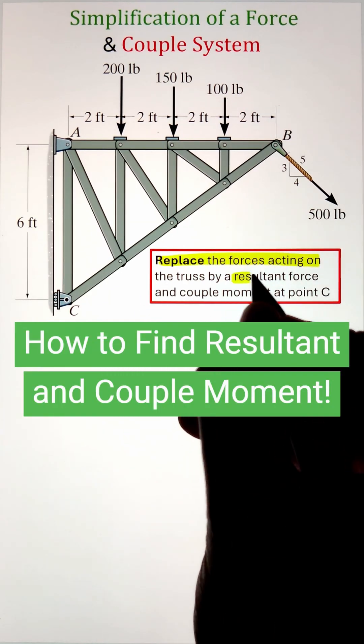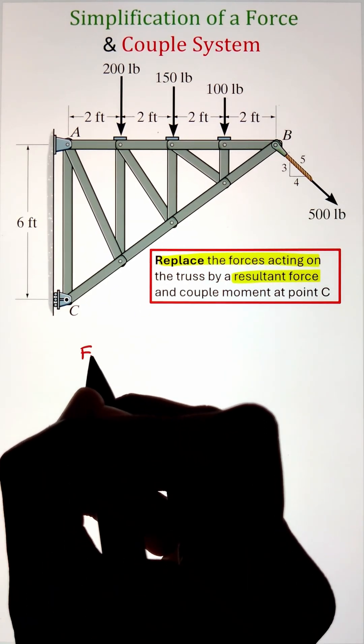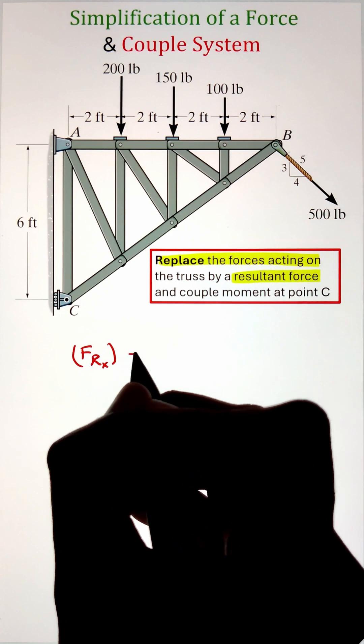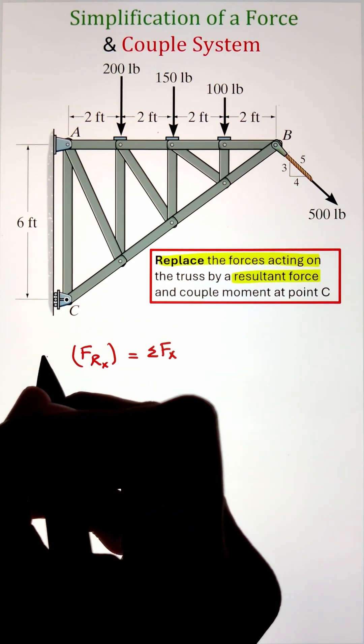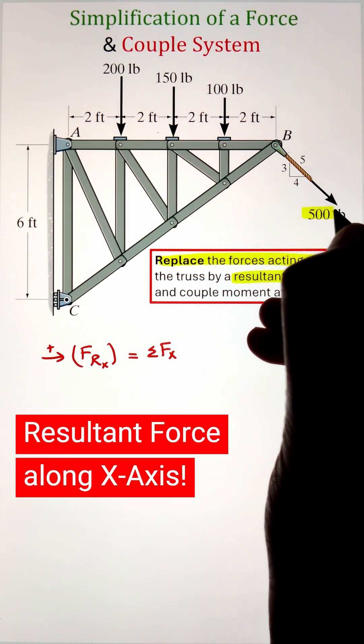In order to replace the forces acting on the truss by a single force and couple moment acting at point C, we can start by resolving the forces into x and y components and then combining them together to figure out the resultant force.